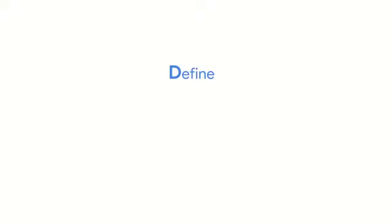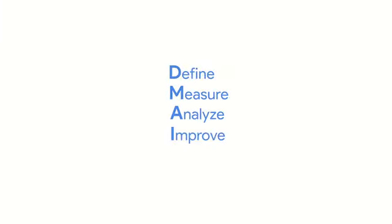There are five phases in the Lean Six Sigma approach. They are define, measure, analyze, improve, and control.